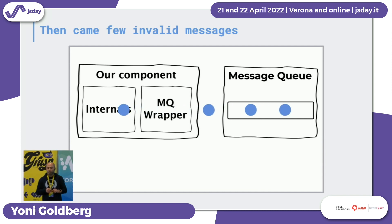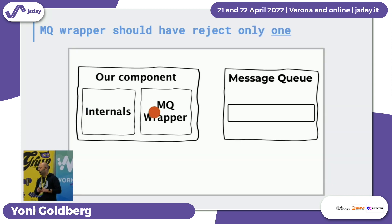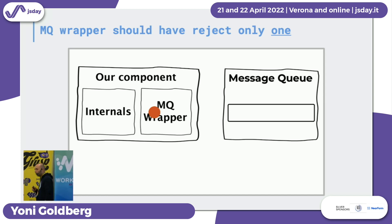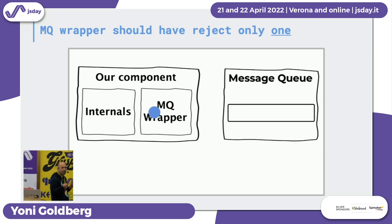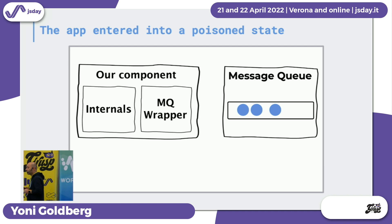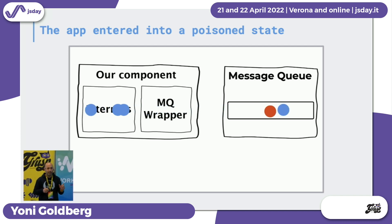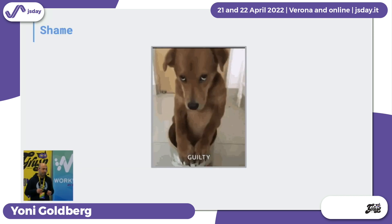Then we started to see one message coming at a time that was an invalid message. Our code caught it and threw an exception. What should have happened is that the message queue library should have rejected only that malfunctioning message — only one. But what happened in practice is that the message queue library rejected all the messages, including good ones. Why? Because there was something about error handling and how it caught the errors of the batch, and all of the messages were rejected. The system entered a poisoned state where every time there was one bad message, all messages were rejected. Eventually, 20% of system messages were not processed. The customer looked at me the next day and didn't even need to say a word.